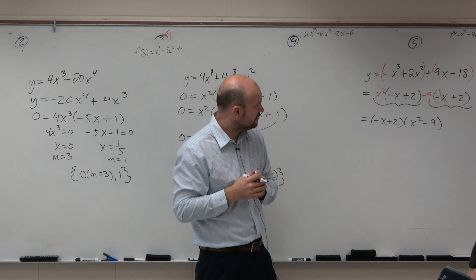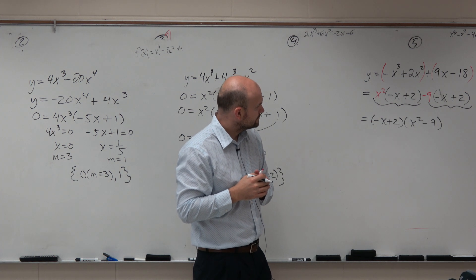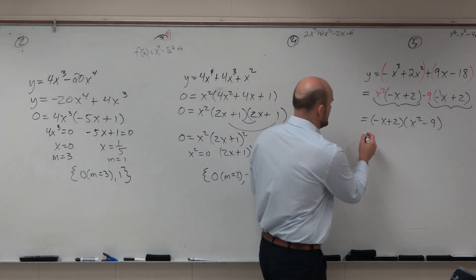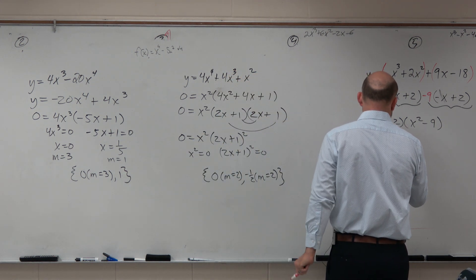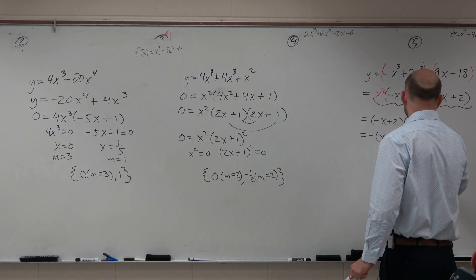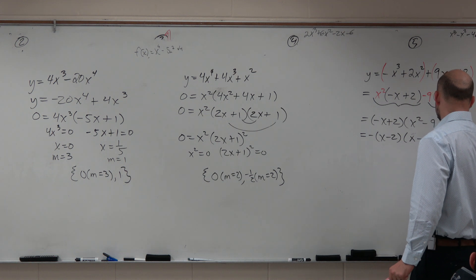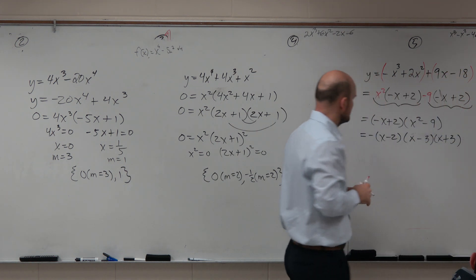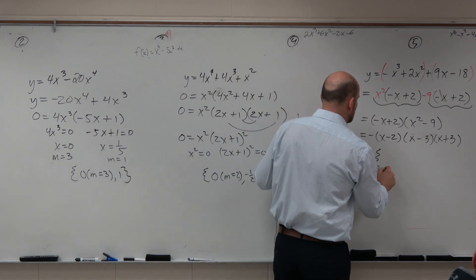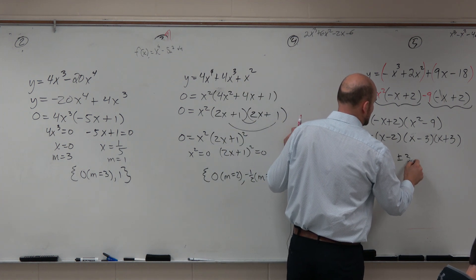And now, you can set them both equal to 0 and go ahead and solve. Or you could also factor out the negative to make it a little bit obvious. Or you could write this as linear factorization form or a product of linear factors. And then we could just easily list all the zeros. 2 plus or minus 3.